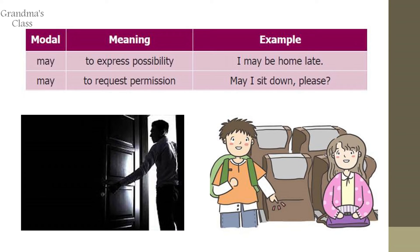The next word is 'may'. May has two usages: one is possibility and the next is permission. For possibility — 'I may be home late' or 'It may rain' — when we see dark clouds, we say 'It may rain'. For permission — 'May I sit down please?' or 'May I answer this question?'